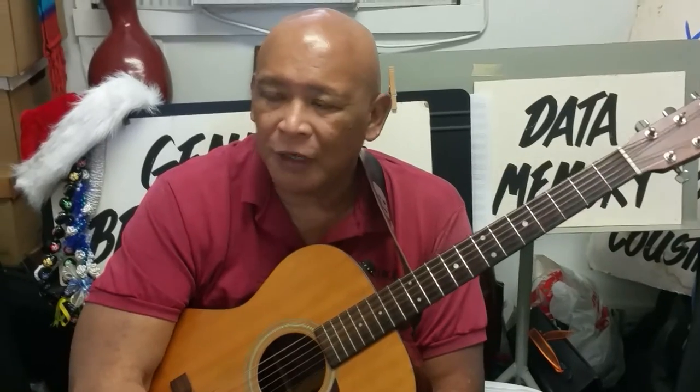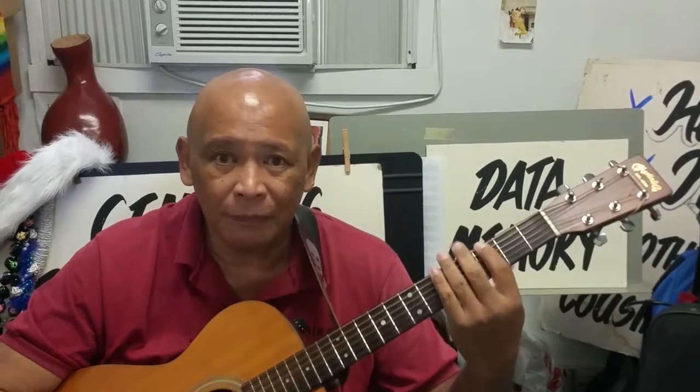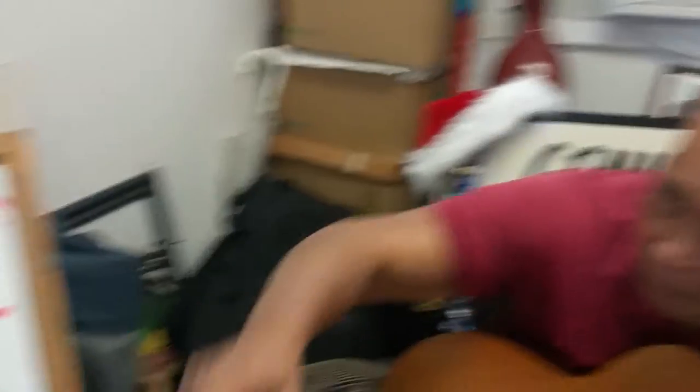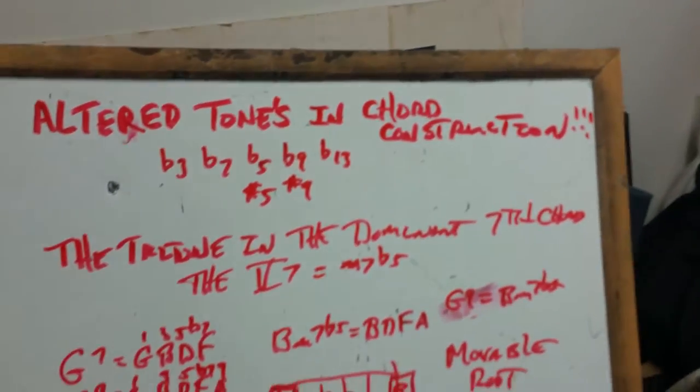In the beginning God created the heaven and the earth. The beginning I'd like to talk about is the starting point. So if you're doing a song in the key of G, G is the starting point. With that said, let's go to the altered tones in the chord construction.